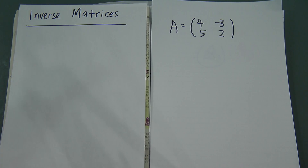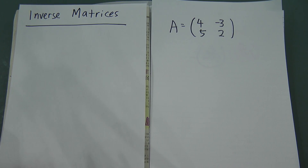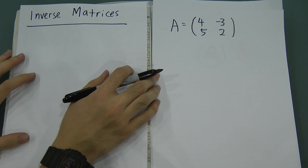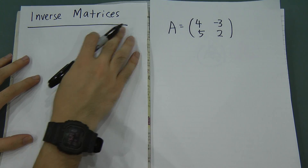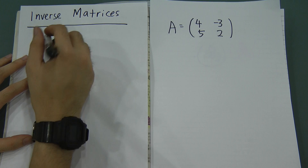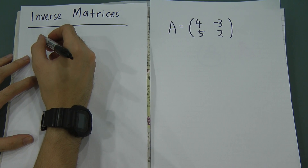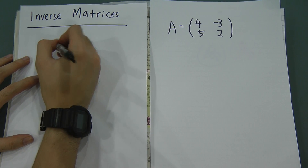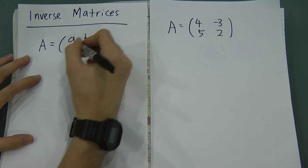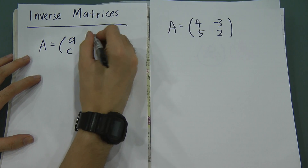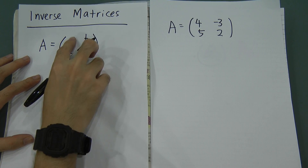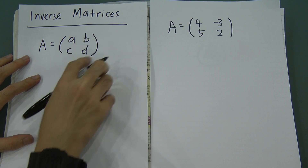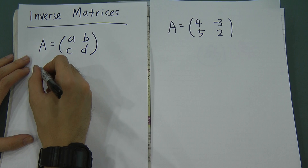I'm going to teach you about inverse matrix. It's very simple and this one always comes up in exam paper 2. Let's say you have matrix A equal to A, B, C, D — you have four values A, B, C, D.